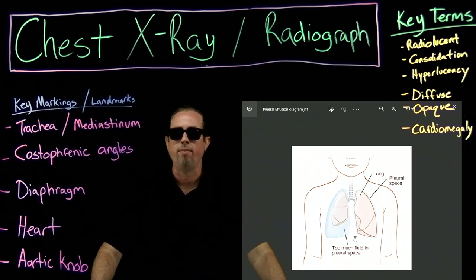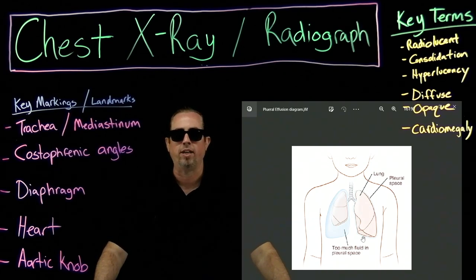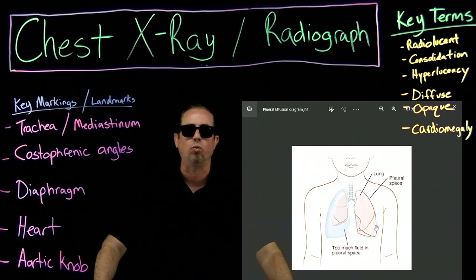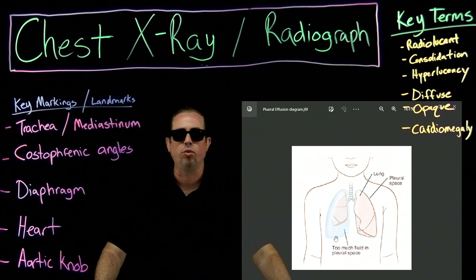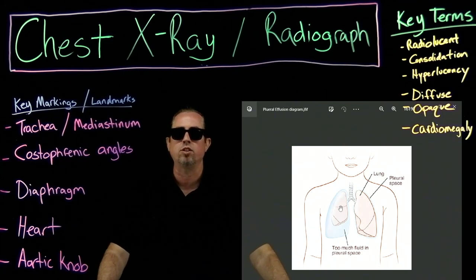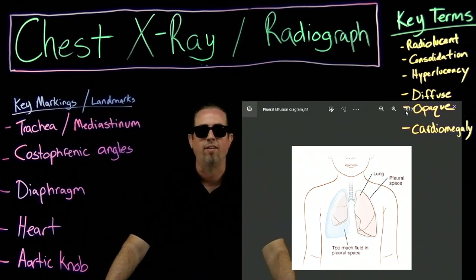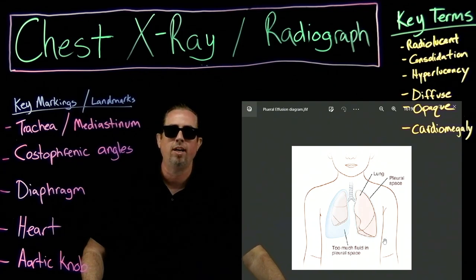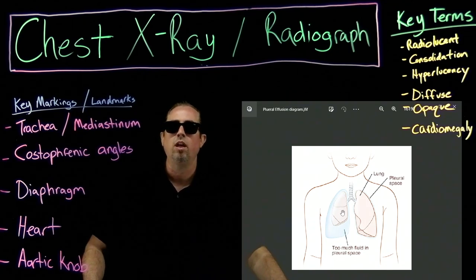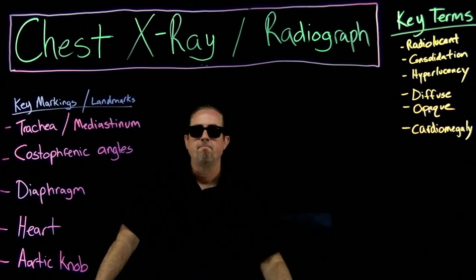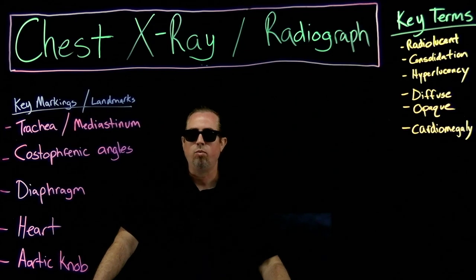Let me clarify what pleural effusion is. There's a pleural space — a sac around your lungs between the ribs and the lungs — normally filled with a small amount of fluid. When there's too much fluid, it fills up that space, encapsulating the lung. The lung can't expand, and that's where we have a problem. The blue in this diagram represents the fluid in the pleural space surrounding the lung.